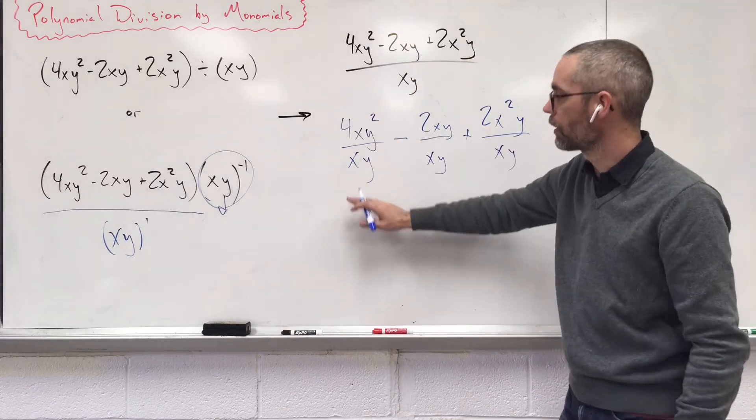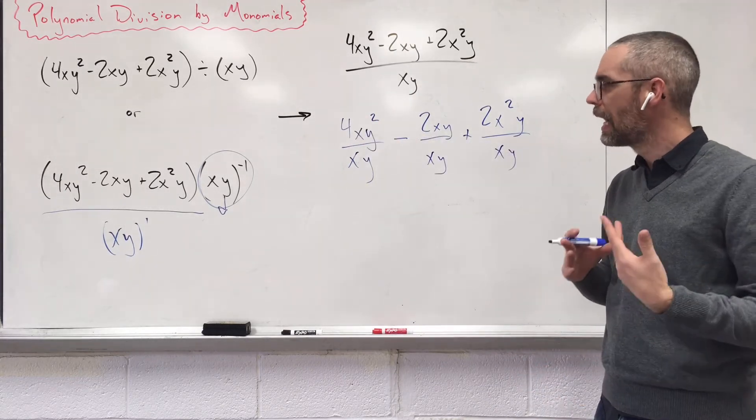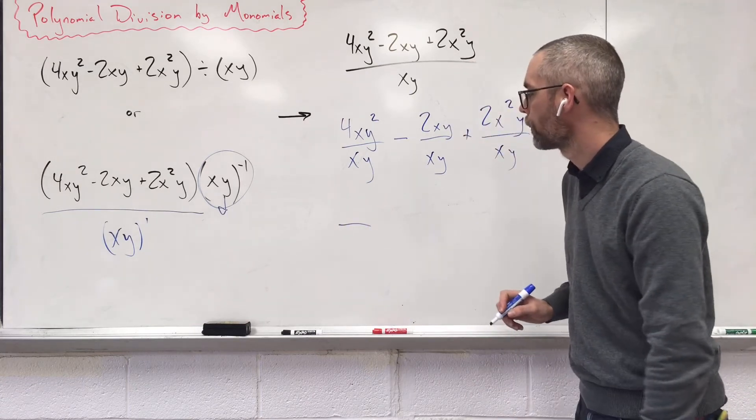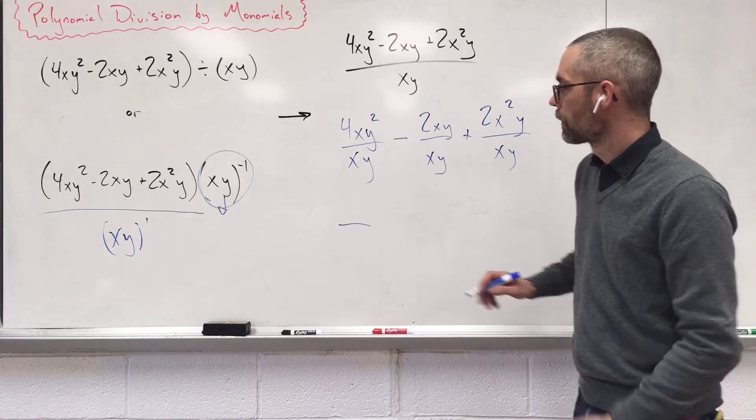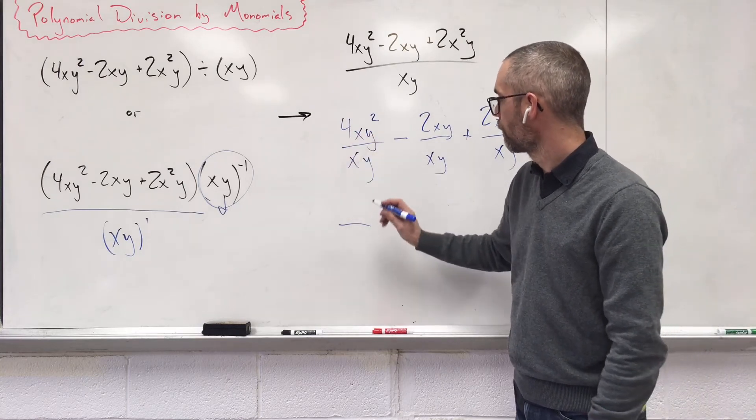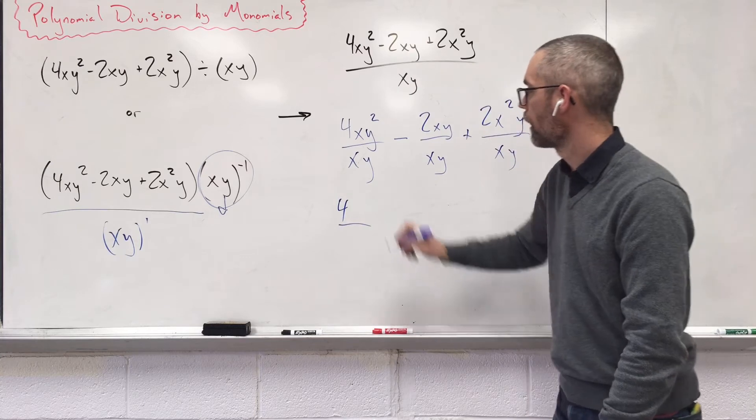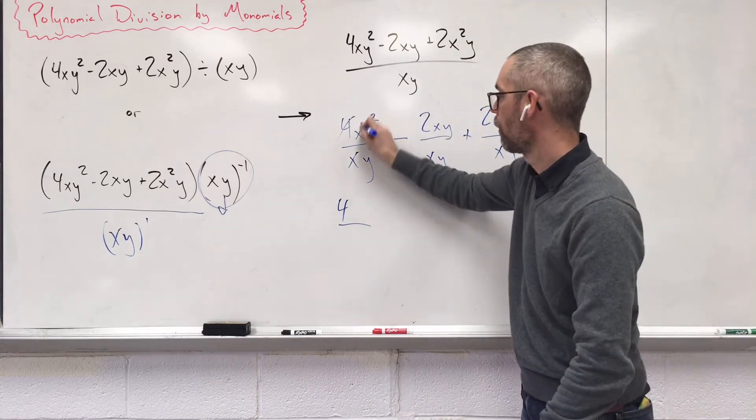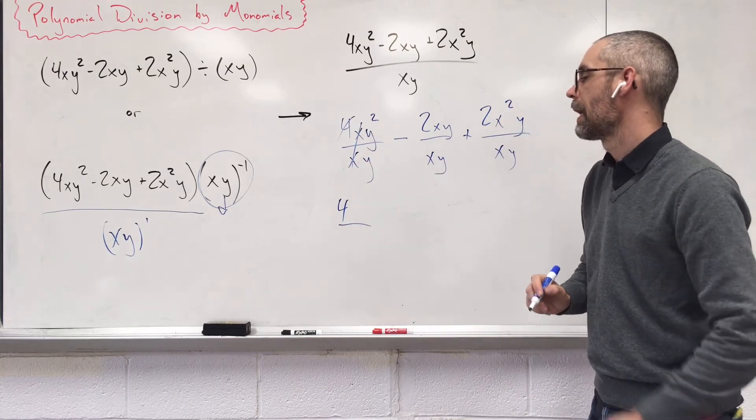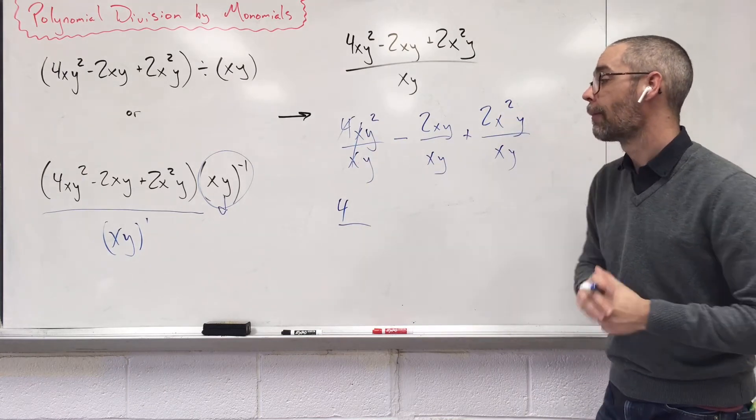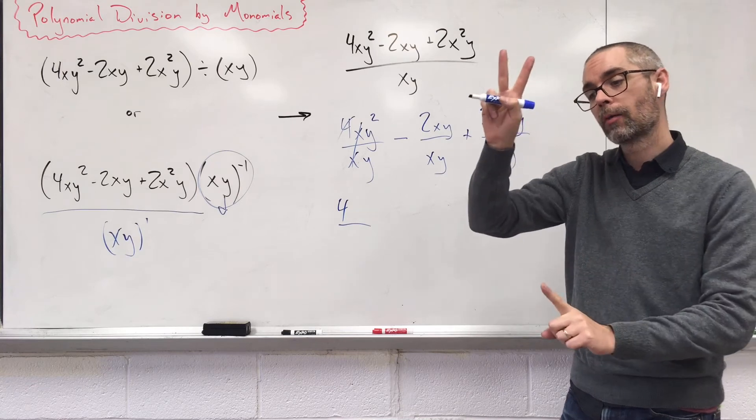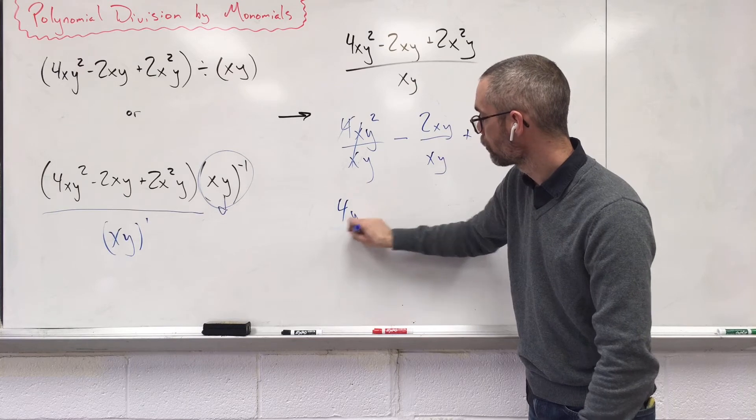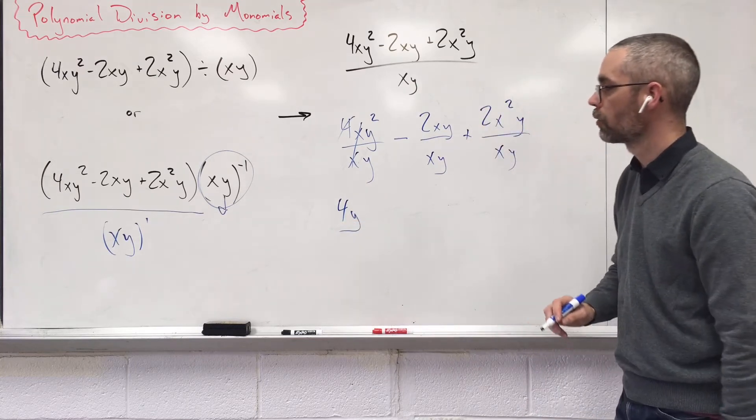So the first problem, I want to simplify what I can simplify. Let's start off by putting a fraction there. Nothing's going to cancel with that 4, so I bring the 4 right down. We used it. My x's, I've got 1x up top, 1x on bottom. They pair up, they disappear. Now my y's, I happen to have 2 up top, 1 on the bottom. I have more up top, so 2 minus 1 gives me just y. And it looks like we have nothing on the bottom of the fraction, so we don't need that.